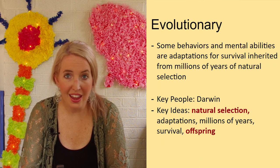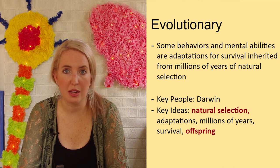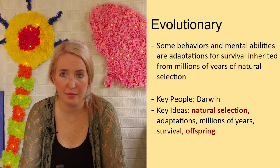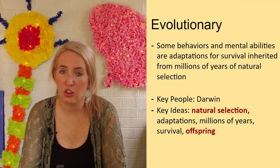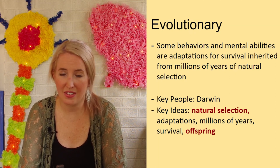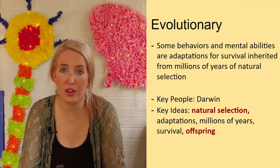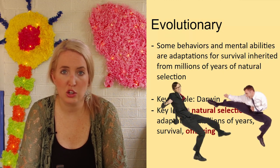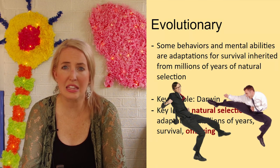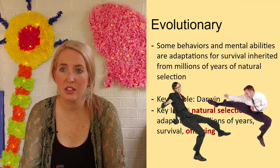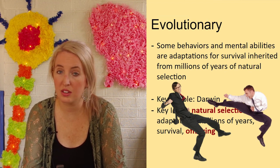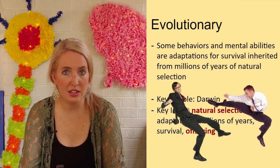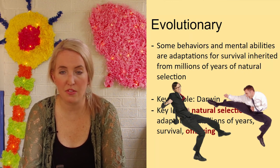Up next is evolutionary psychology, which explains behavior from an evolutionary standpoint. It came from functionalism — asking why we have the parts of our mind that we do, how they are adaptive, and how they help us survive. Evolutionary psychologists apply this to all behaviors. For example, why would someone be aggressive? An evolutionary psychologist might say aggression is adaptive because aggressive individuals can defeat enemies and protect their families, so that trait continues to be passed on from generation to generation.